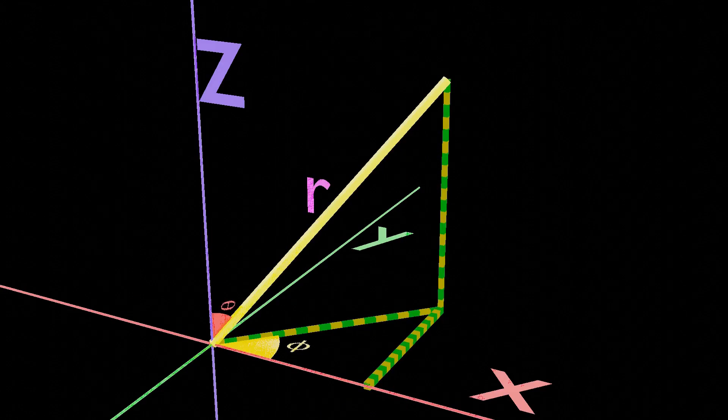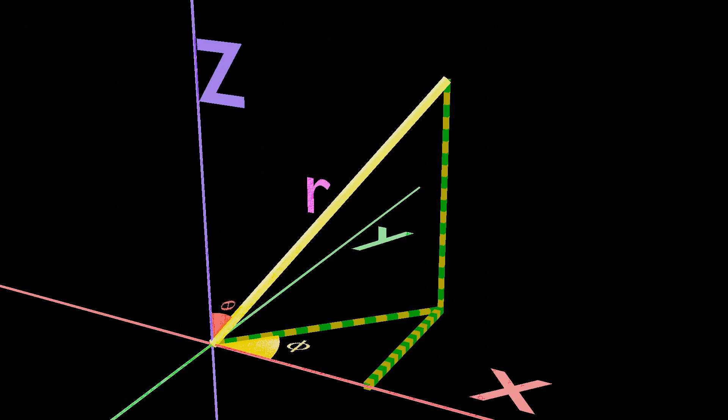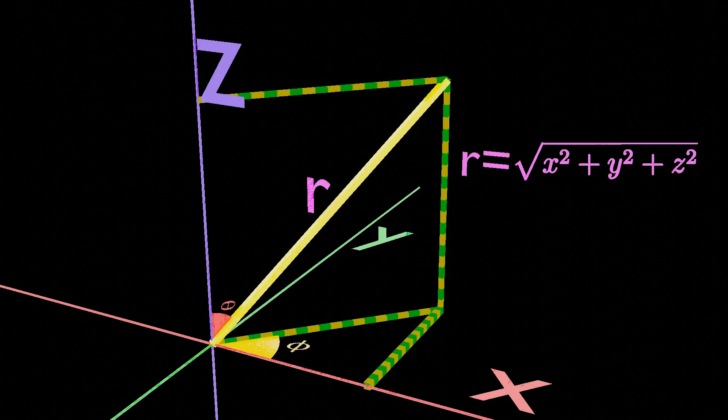The formula used to calculate r is the same as the distance law between two points in space with one of them being the origin. So r equals the square root of x squared plus y squared plus z squared.